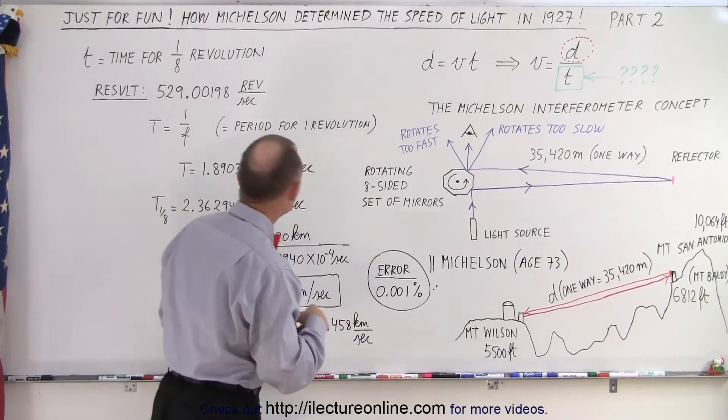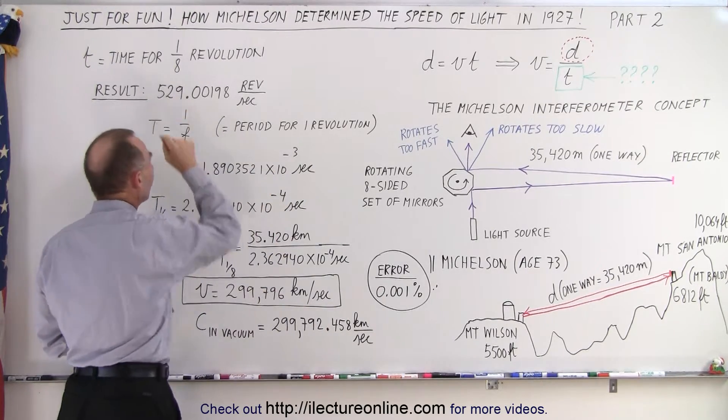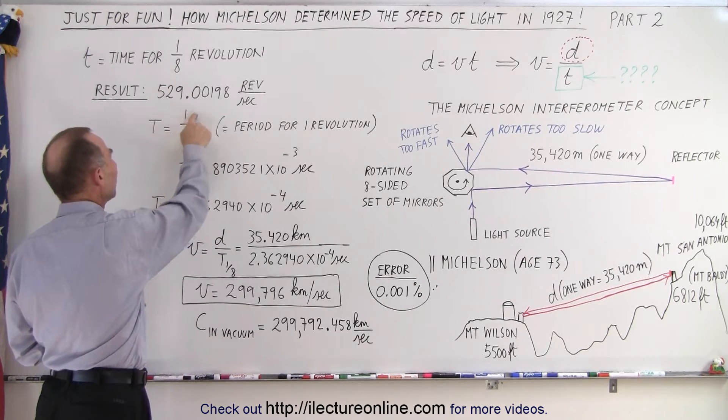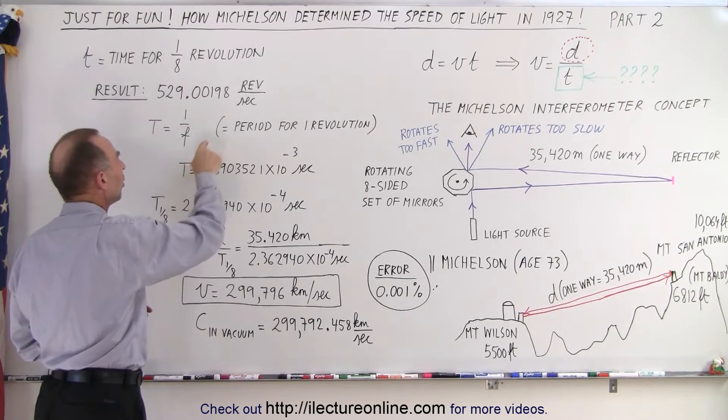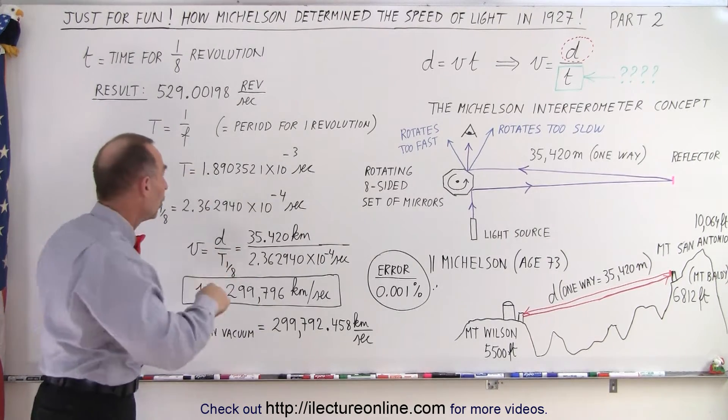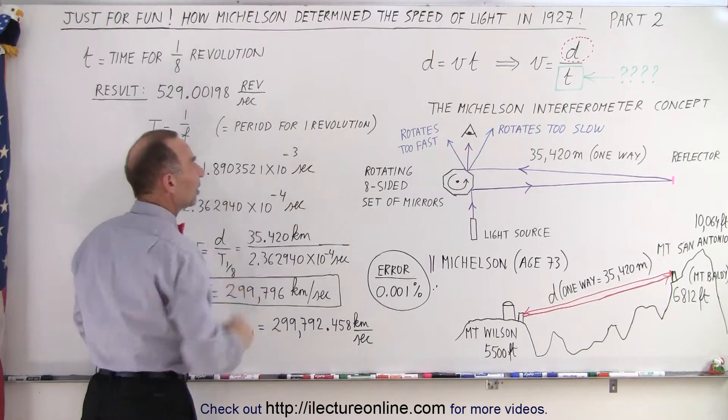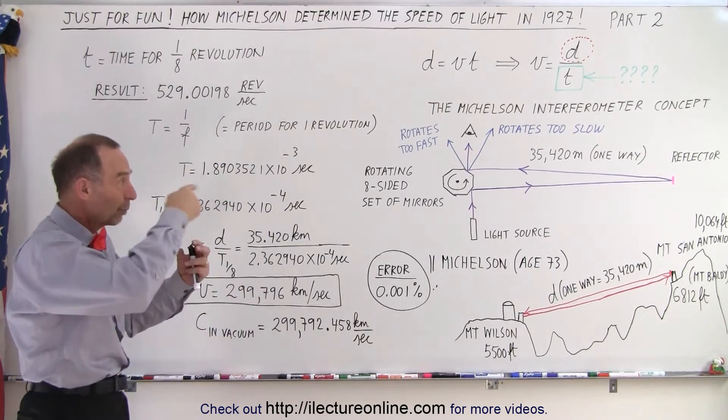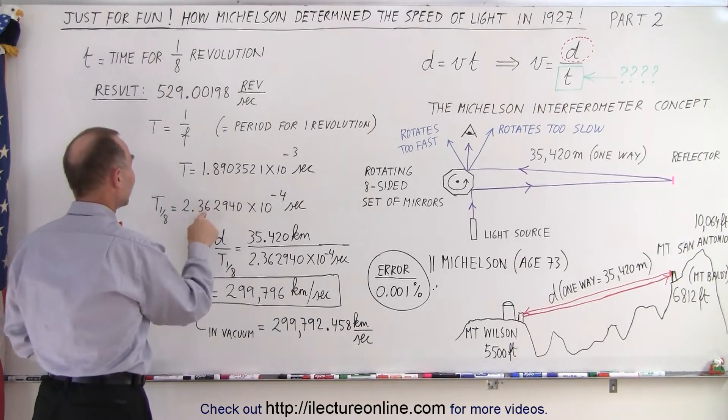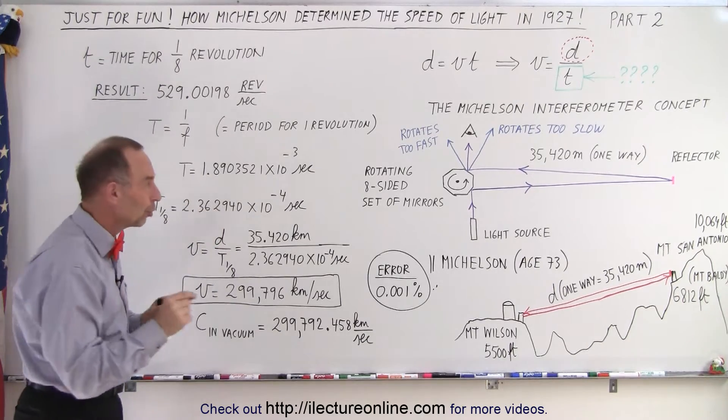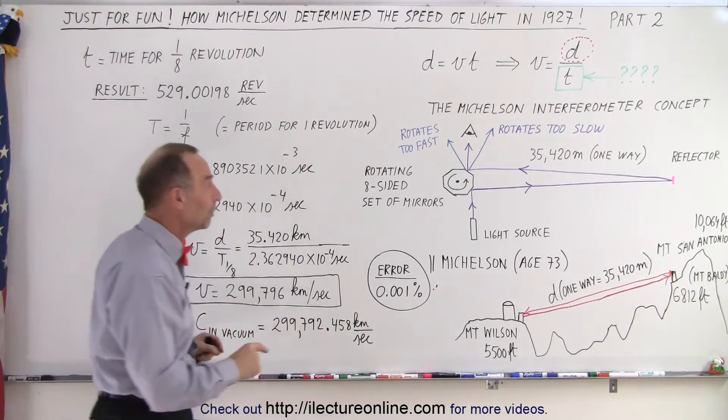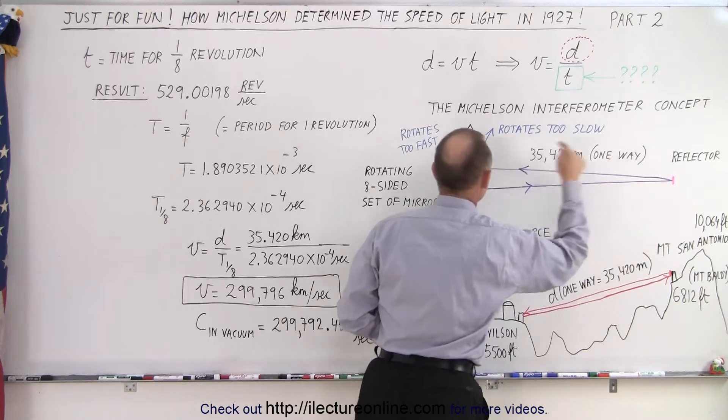So with the counter, they would then come to the point where they would measure just slightly over 529 revolutions per second. So then you want to have the period, and the period is the inverse of the frequency, the number of revolutions per second. So if you take the inverse of this number, you end up with this number right here. The period for one complete revolution was 1.89 times 10 to the minus three seconds. But then of course, we're not looking for a single revolution. We're looking for one eighth of a revolution. So now you have to take this number and divide it by eight to get this number. That is the time it took for the wheel to turn to one eighth of a complete revolution, which was also the time that it took the light to go from here to Mount Baldy and back.